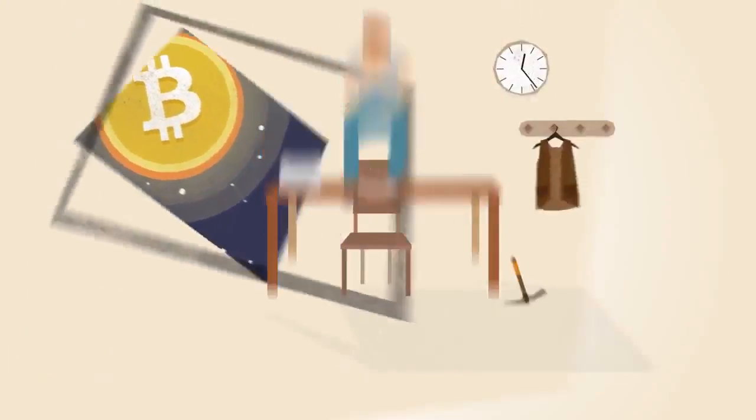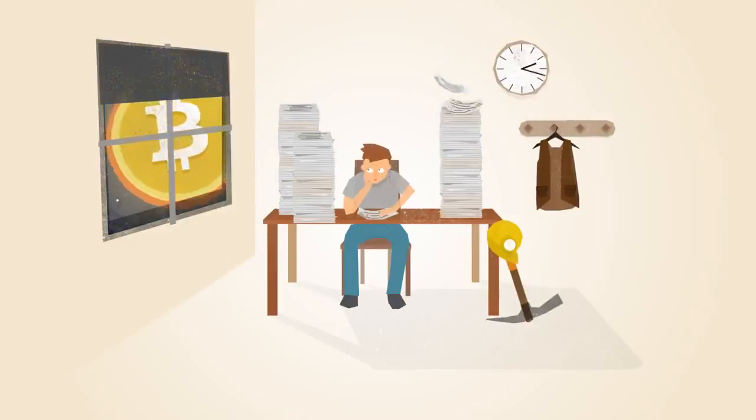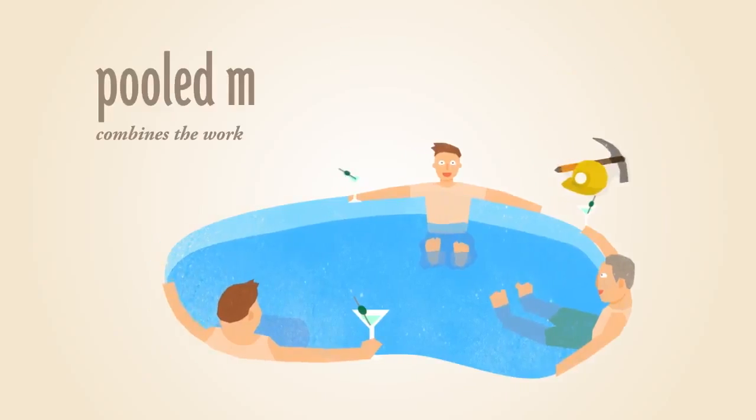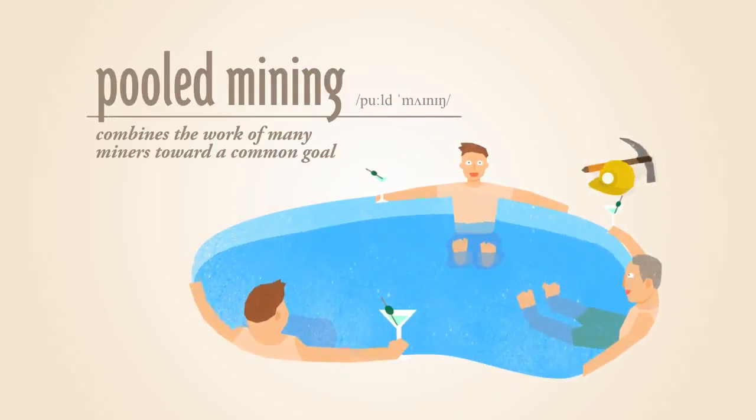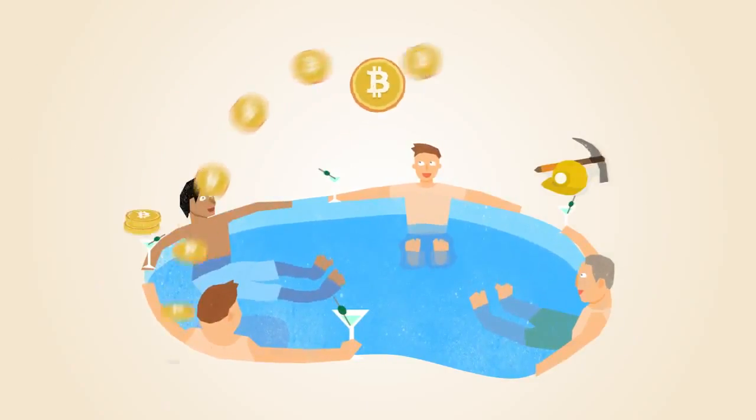As the popularity of Bitcoin increases, more miners join the network, making it more difficult for individuals to solve the math problems. To overcome this, miners have developed a way to work together in pools. Pools of miners find solutions faster than their individual members, and each miner is rewarded proportionate to the amount of work he or she provides.